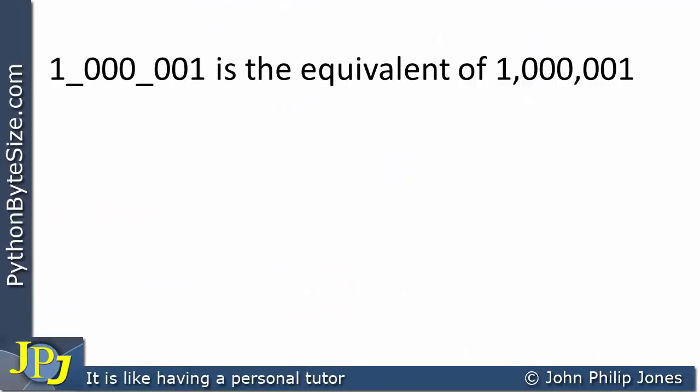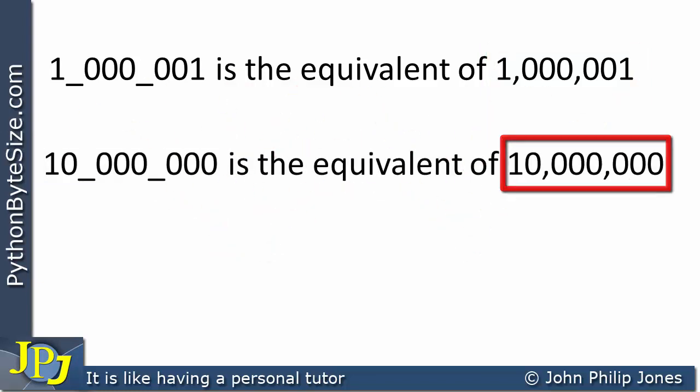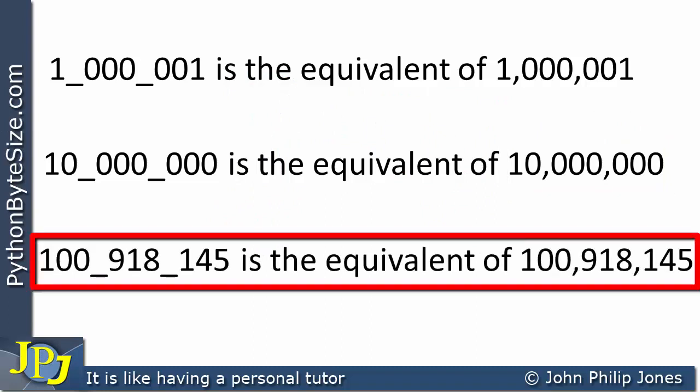So to emphasize matters, this is how we can use it in Python, and it is the equivalent to this, how we would normally use it when we were writing out our mathematics on a piece of paper. Also, if we look at this one here, this is equivalent to this, both of them represent 10,000,000. This one here, both of them represent 100,918,145.